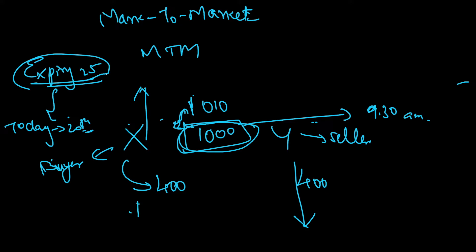So the next morning 10 will be credited to the buyer's account. This 10 is not coming from the sky — it comes from the seller's pocket. So from the seller's account, 10 will be reduced and the seller will have a balance of 390.